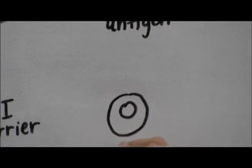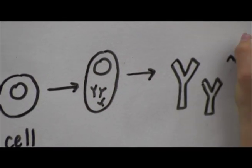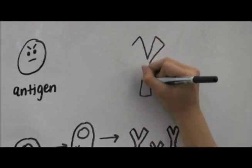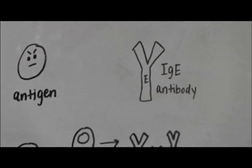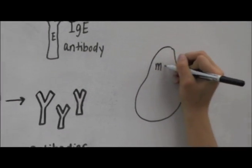Cells called B-cells produce proteins called antibodies that are made to target a specific invader. Antibodies are shaped like a capital letter Y. The antibodies that are produced as a response to peanuts are called IgE.